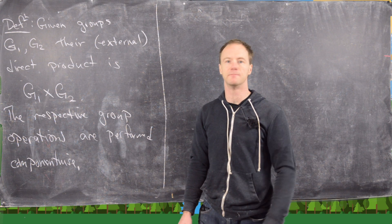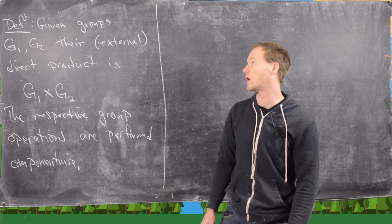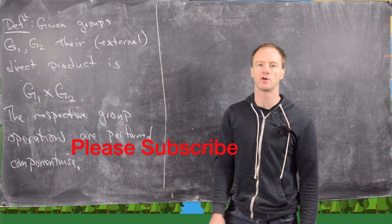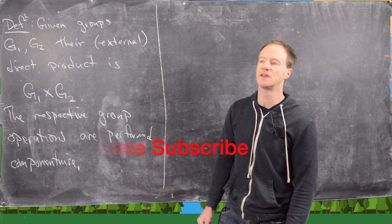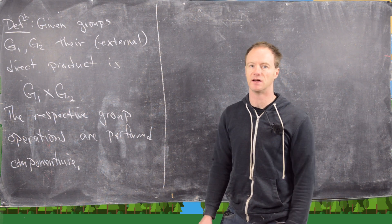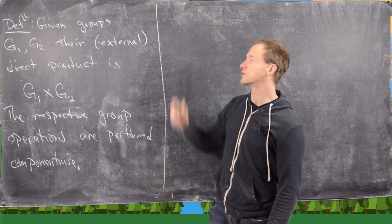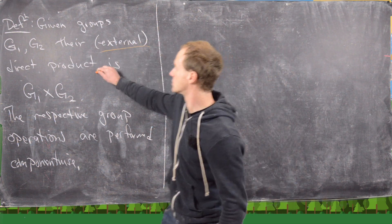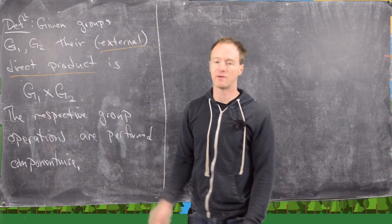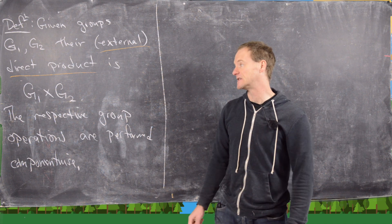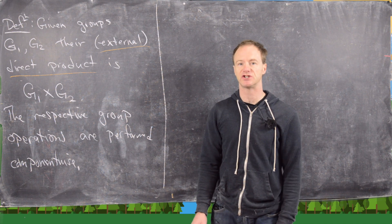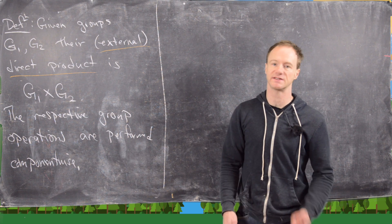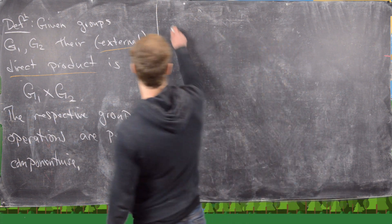In this video we're going to combine some groups together using something called the external direct product. You can define this for any number of groups. We're going to define it for two groups and then you can inductively define it for more. Given two groups G1 and G2, their external direct product's set is just the cross product of G1 and G2, and their operations are performed component-wise.